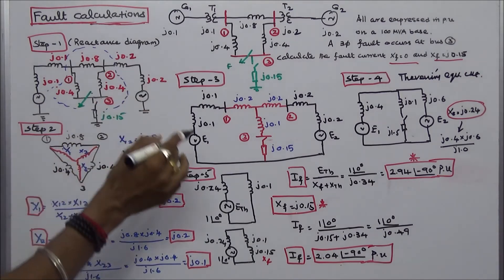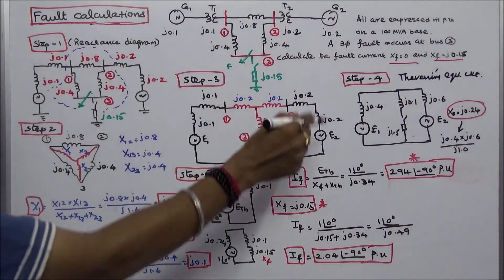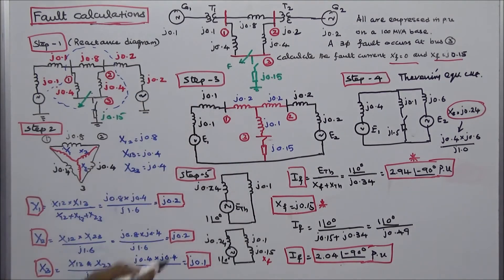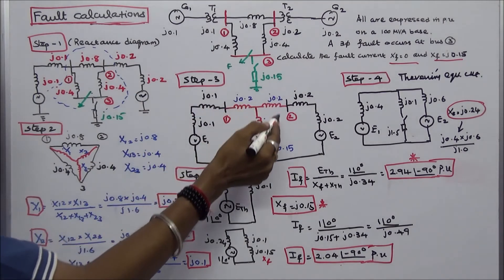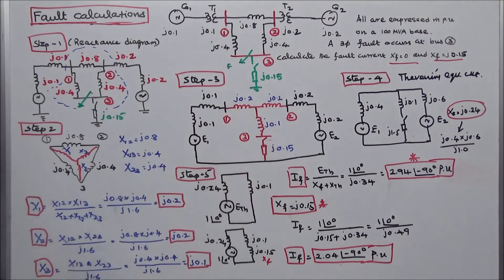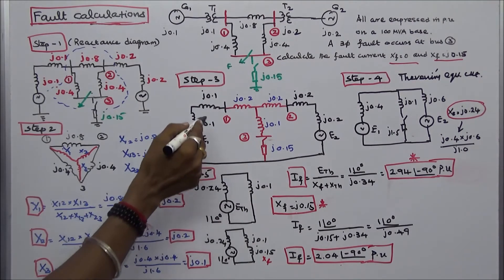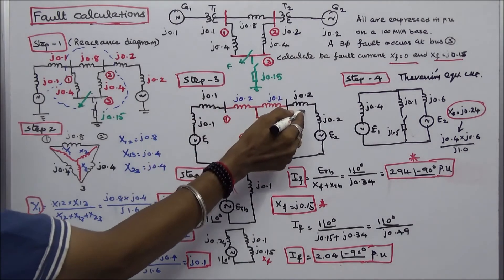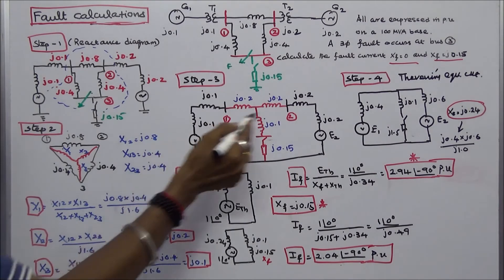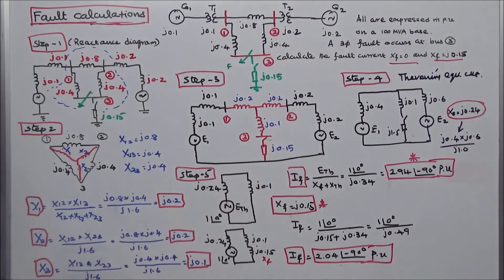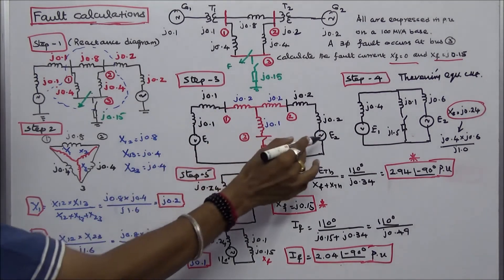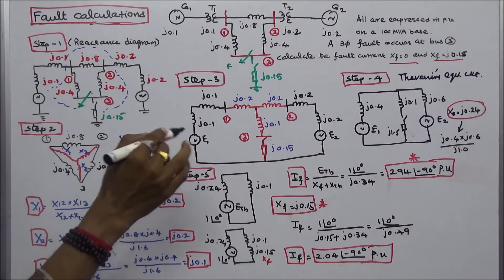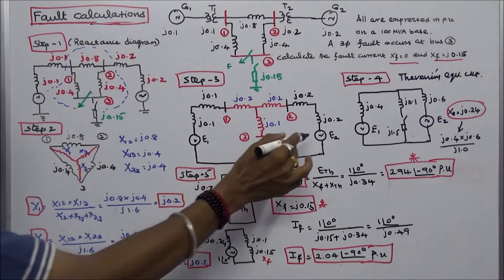Step 3: redraw the circuit. The delta-connected impedances are now star-connected with values J.2, J.2, and J.1. Transformer reactances are J.1 and J.2. Generator reactances are J.1 and J.2. The pre-fault voltage sources E1 and E2 are each 1 angle 0.